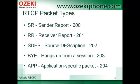The operation of RTP is based on five RTCP packets, which are continuously sent by the participants of the conversation. A Sender Report is sent by the active senders and informs all participants about transmission and reception statistics. A Receiver Report is not from the active senders and covers only reception statistics.